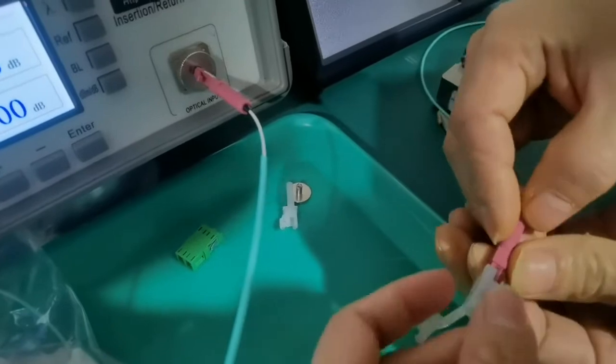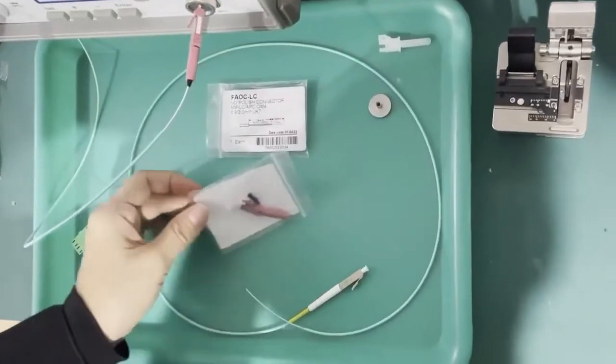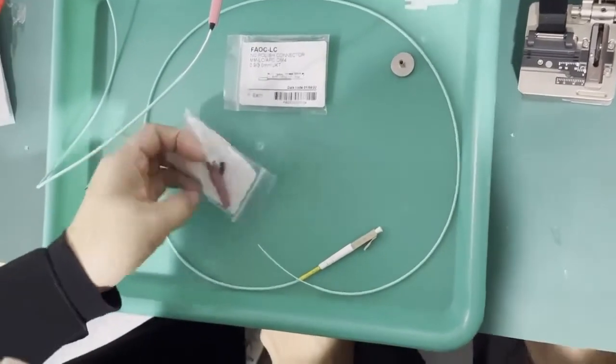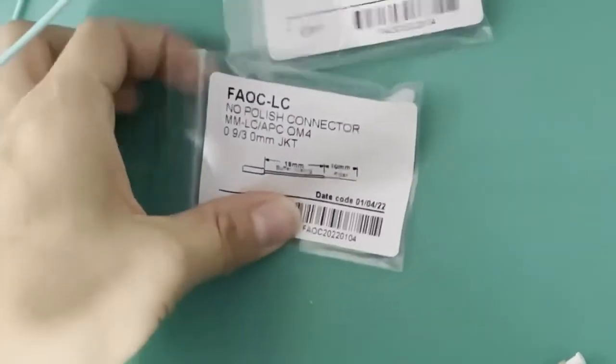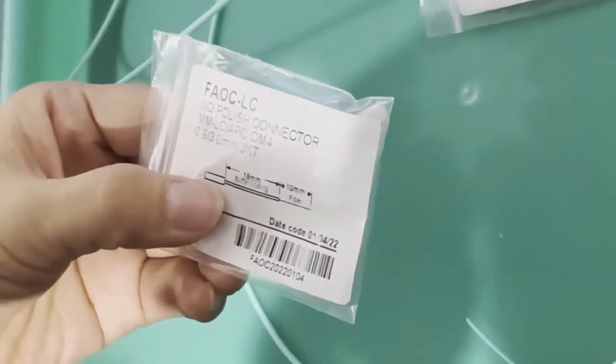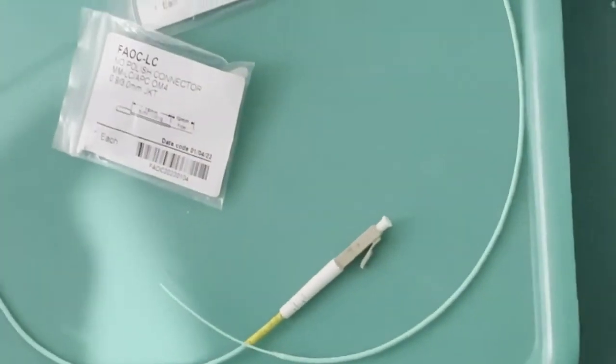Then you put the dust cap and it can be used again. This is the LC-OM4 FASTA connector with OM4 fiber inside. You can see the package label here has a measurement guide on how to strip the fiber. Now our engineer operates.